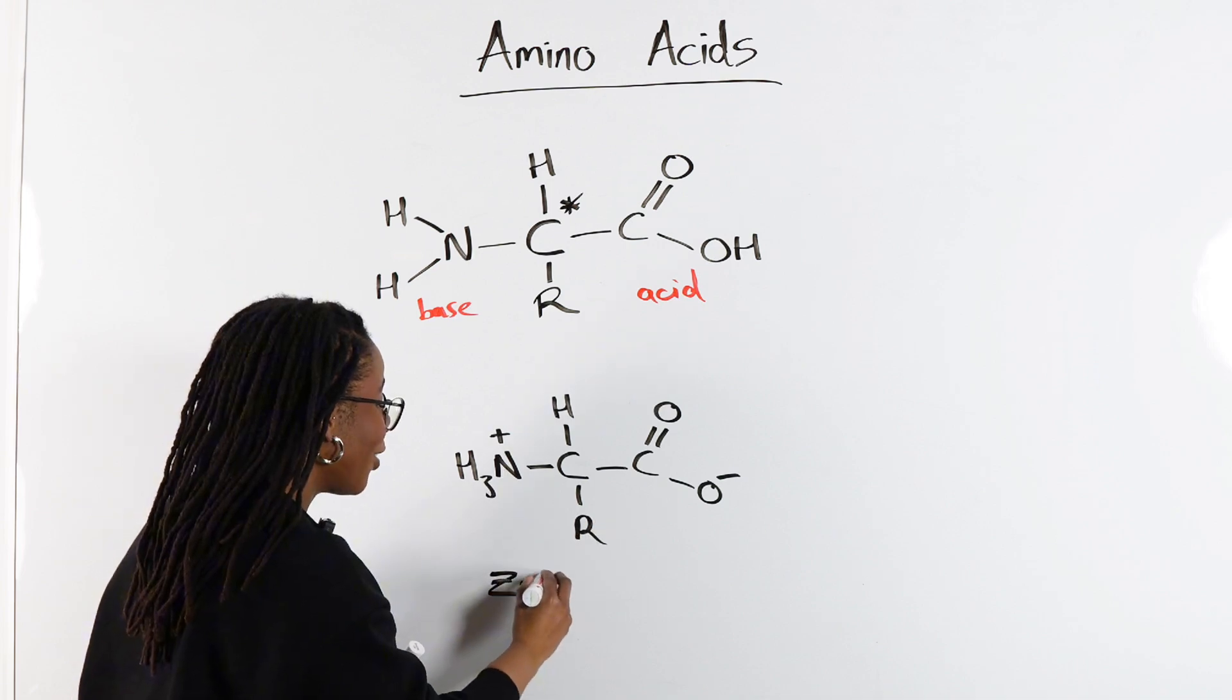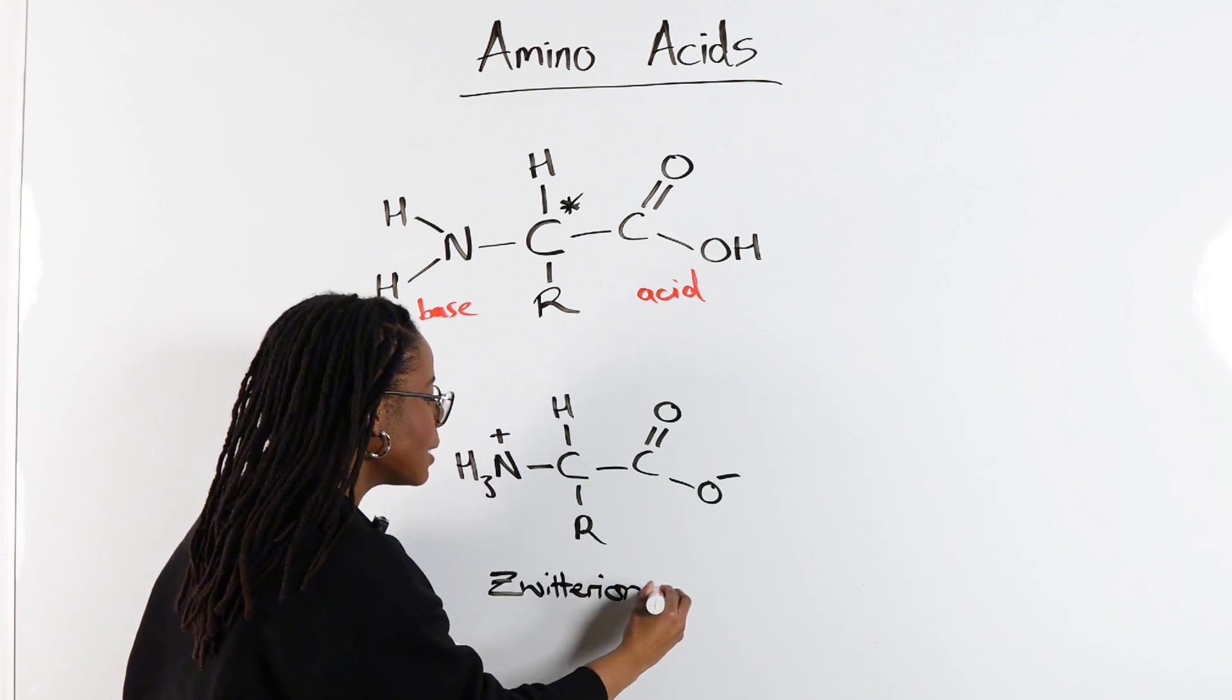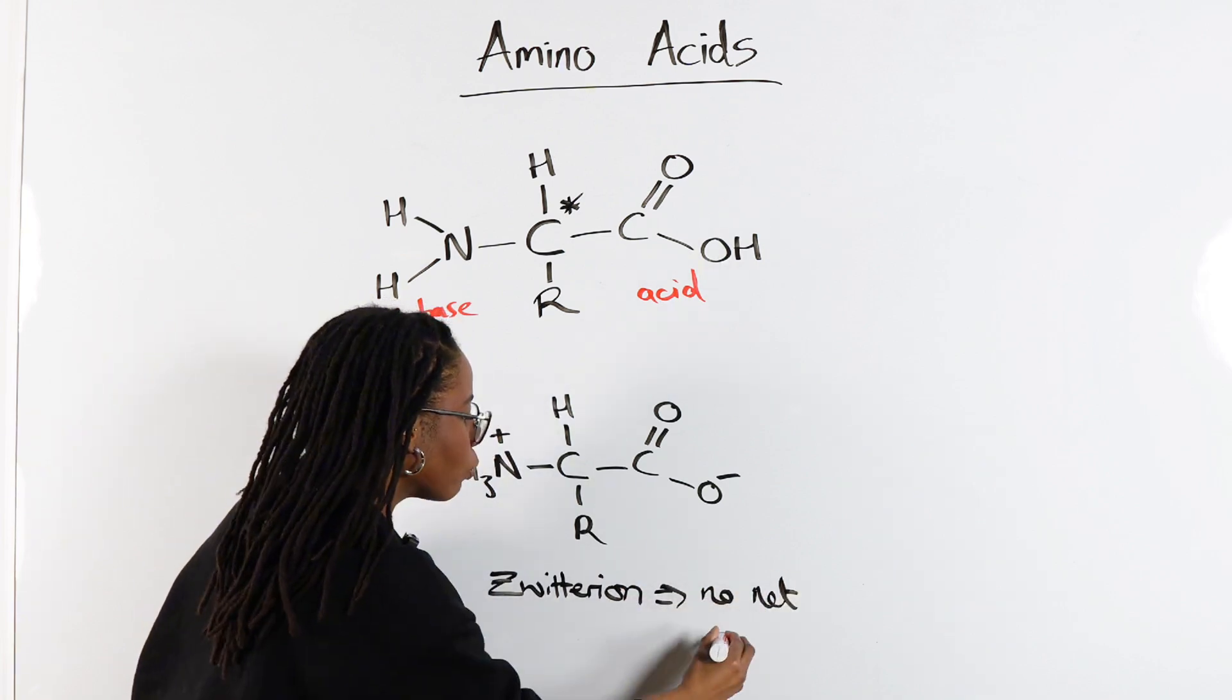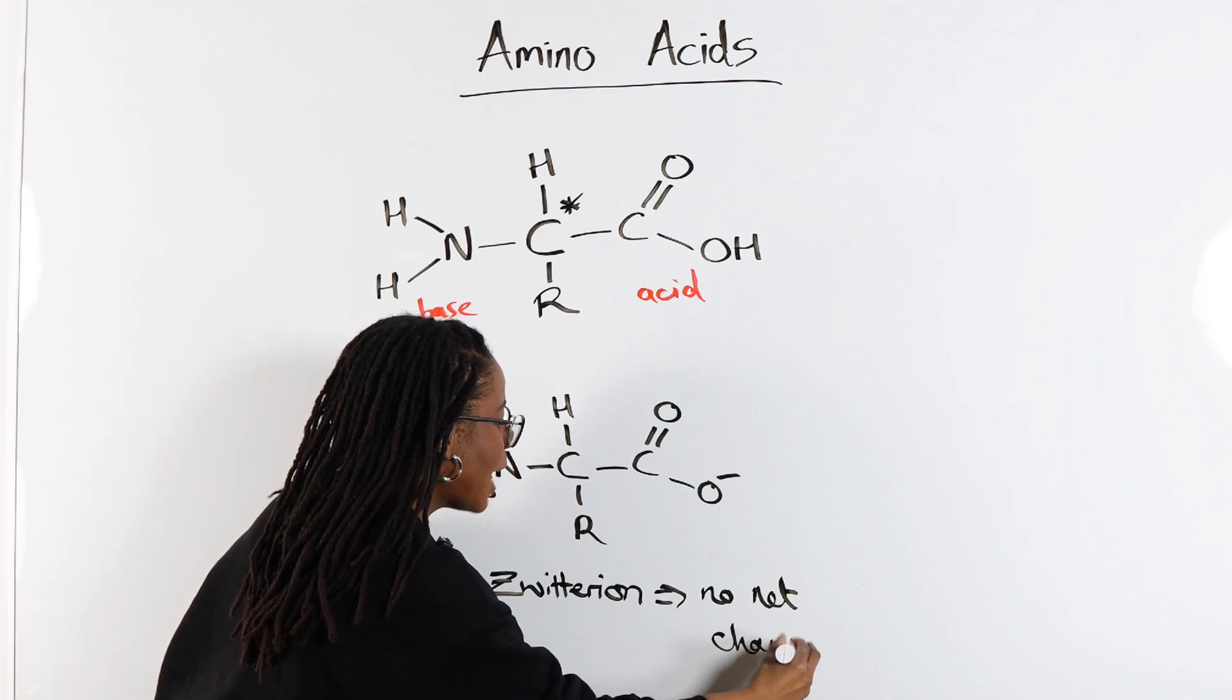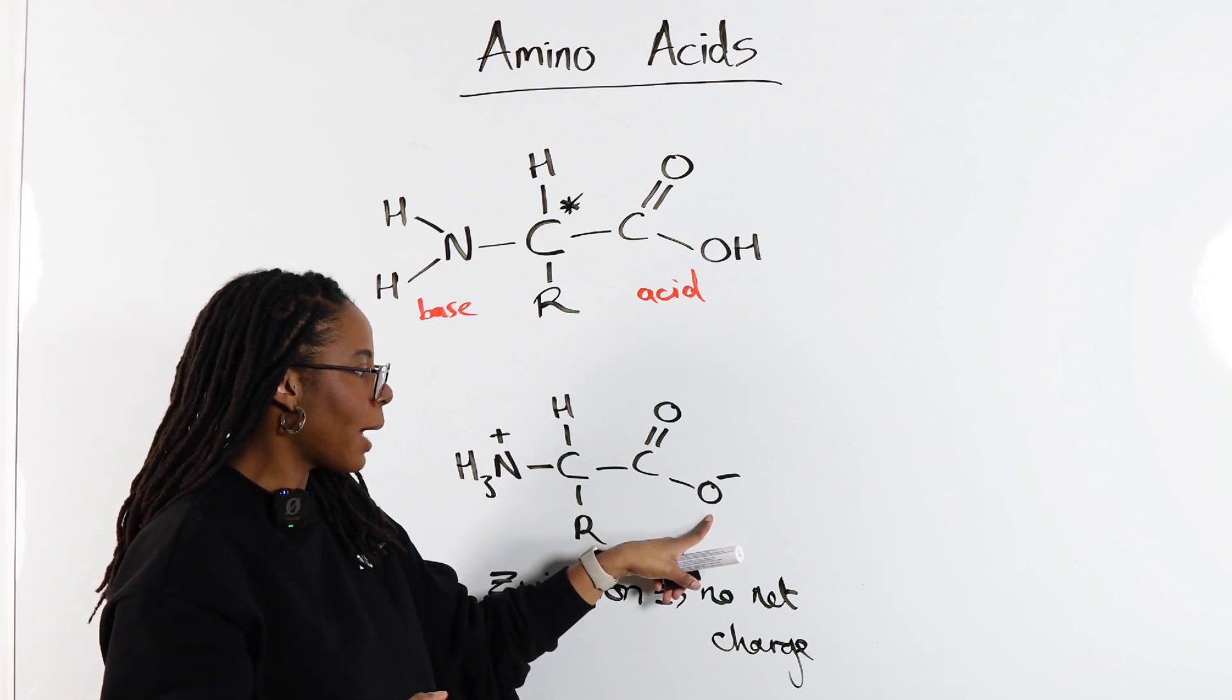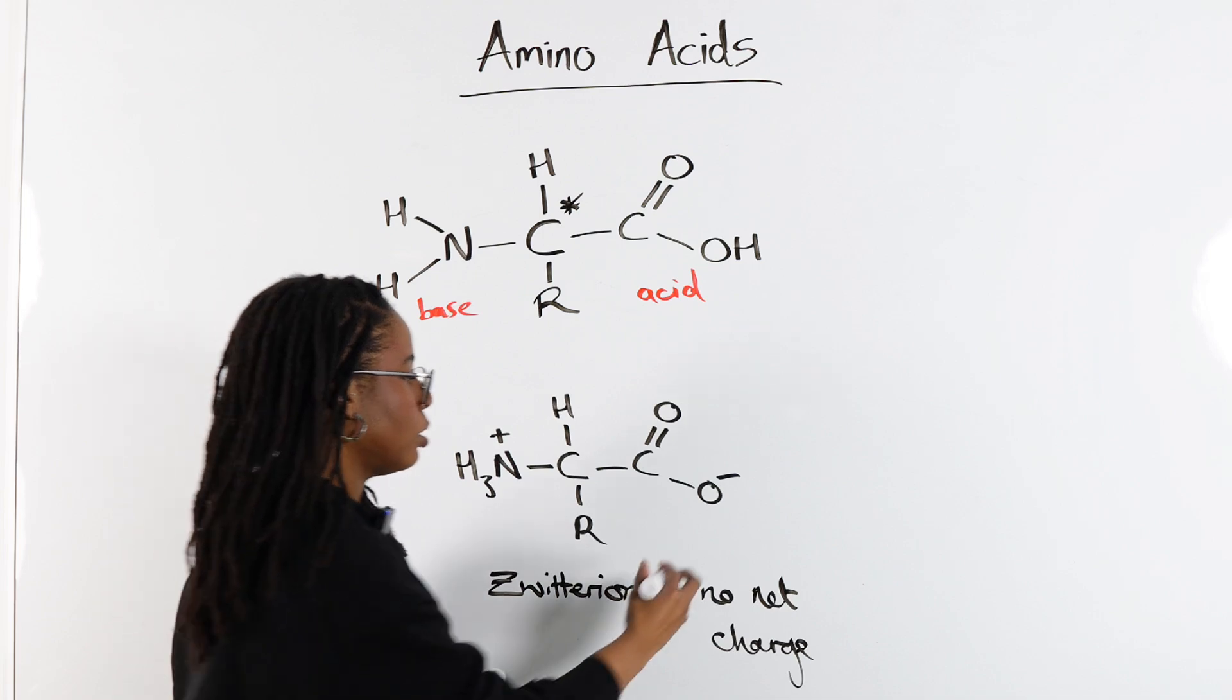But the key with a zwitterion, and a really common mistake that students make, a zwitterion must have no net or no overall charge. So the charges have to add up to zero. So we've got one plus and one minus. Even though there are charges within the molecule, there's no net charge.